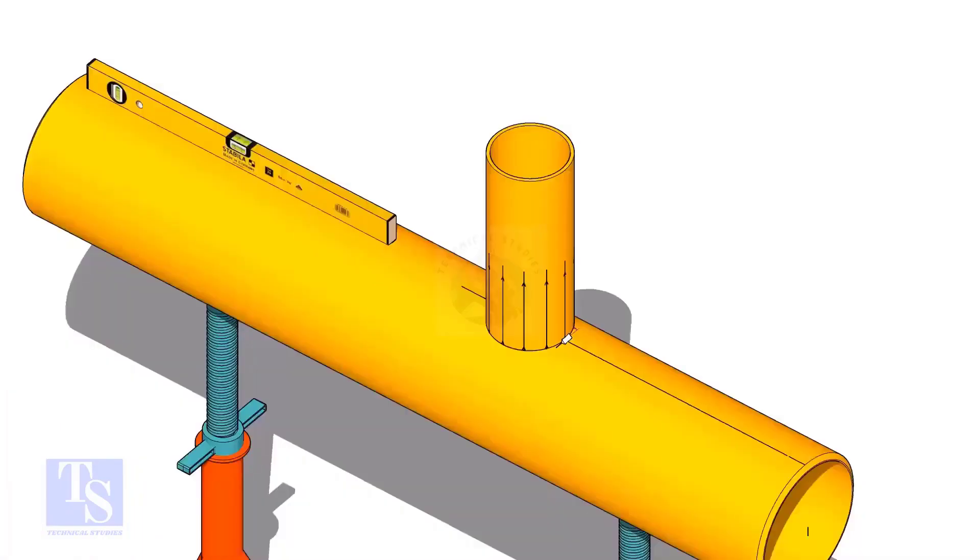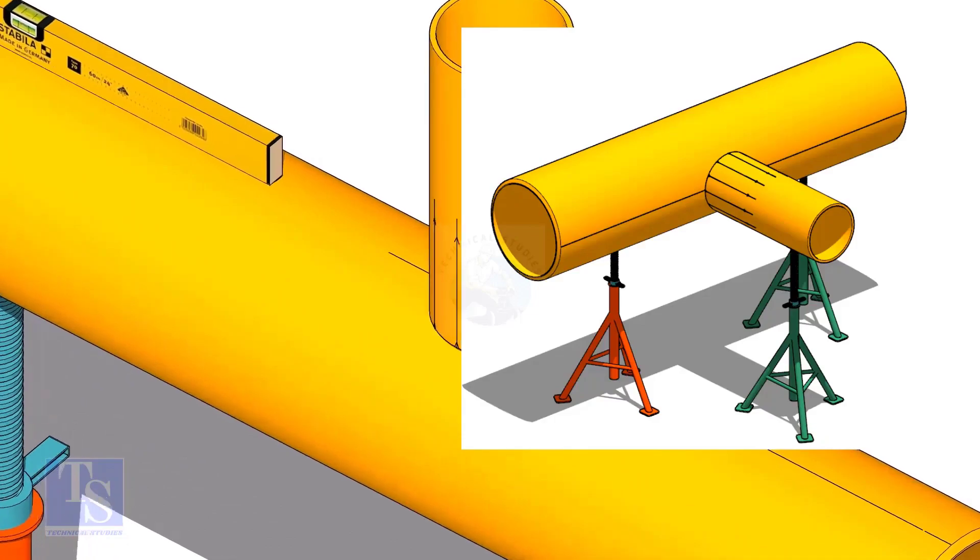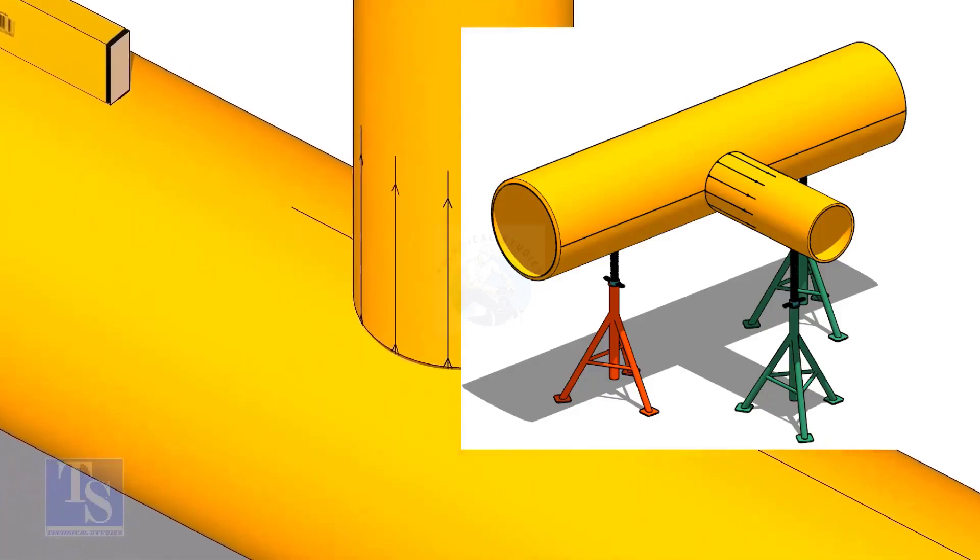Tack weld the branch on the header just to stand it vertically. If the pipes are large, you can do it in the horizontal position also.